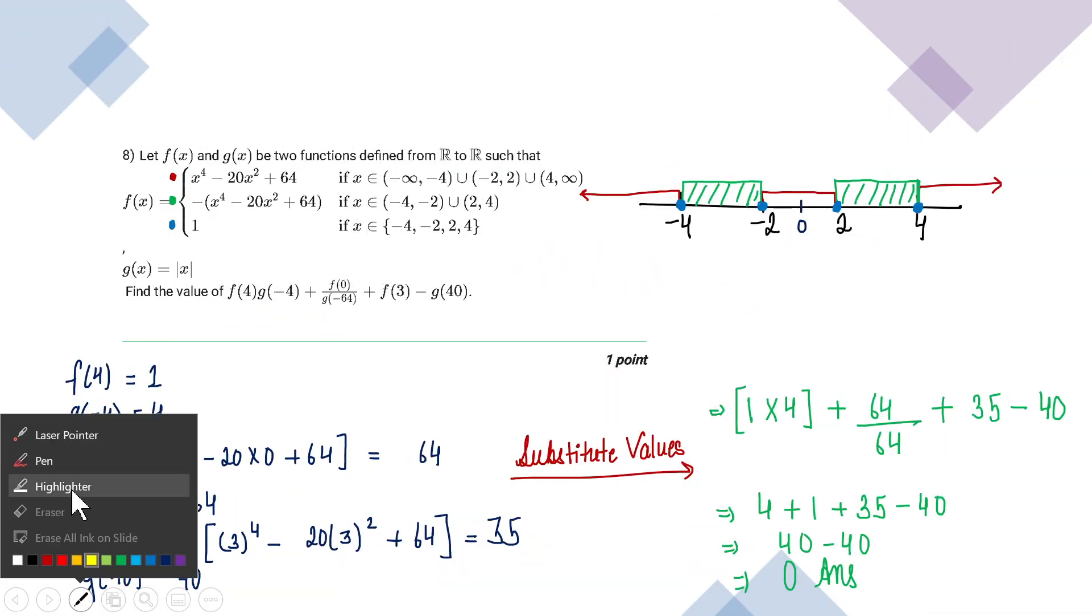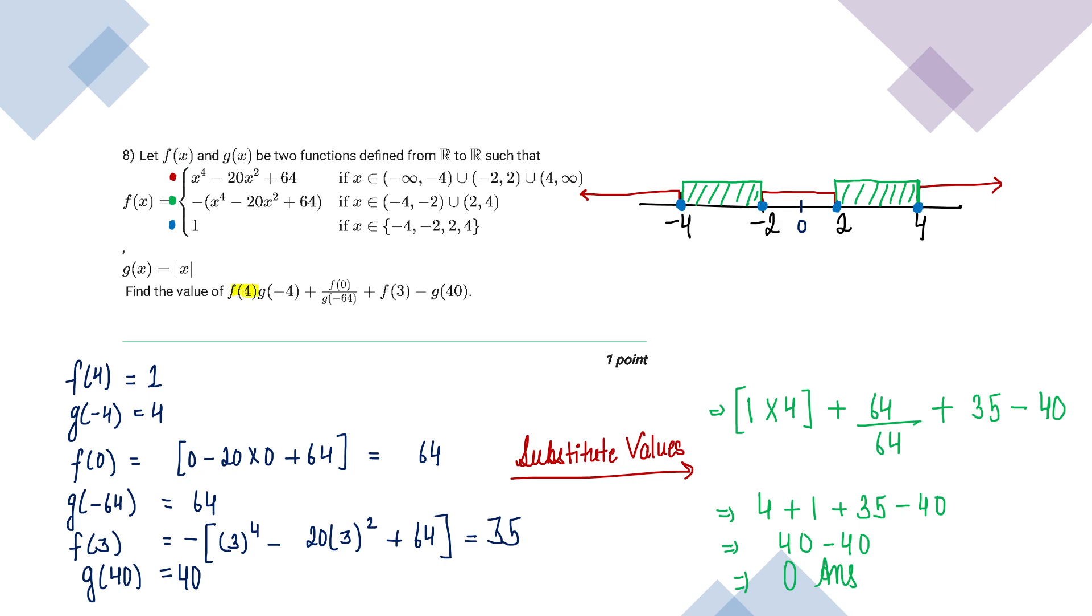I need to find f of 4. So f of 4 was given as 1. g of minus 4 will be 4. Why? Because modulus function gives us positive value.